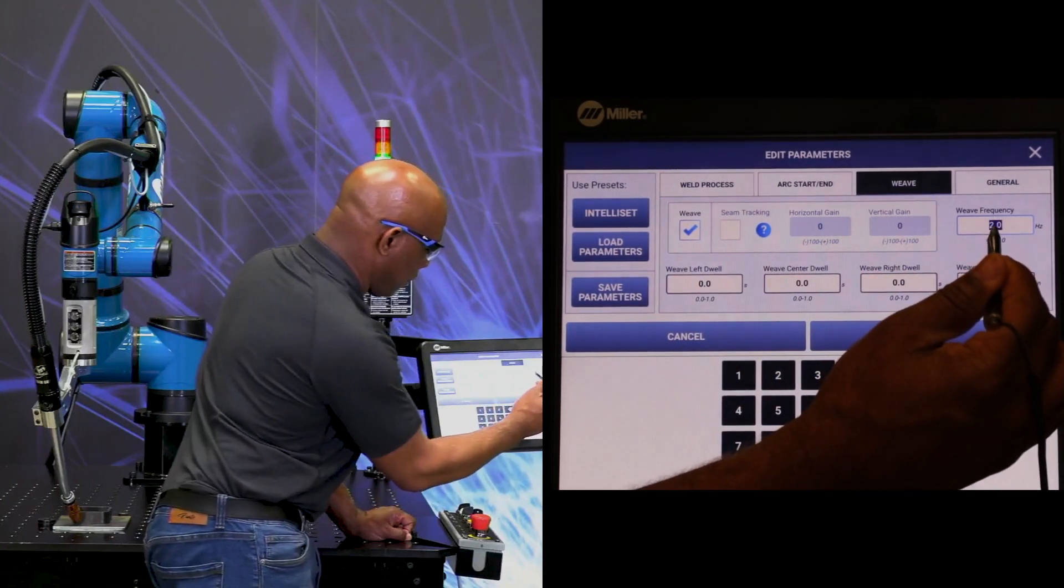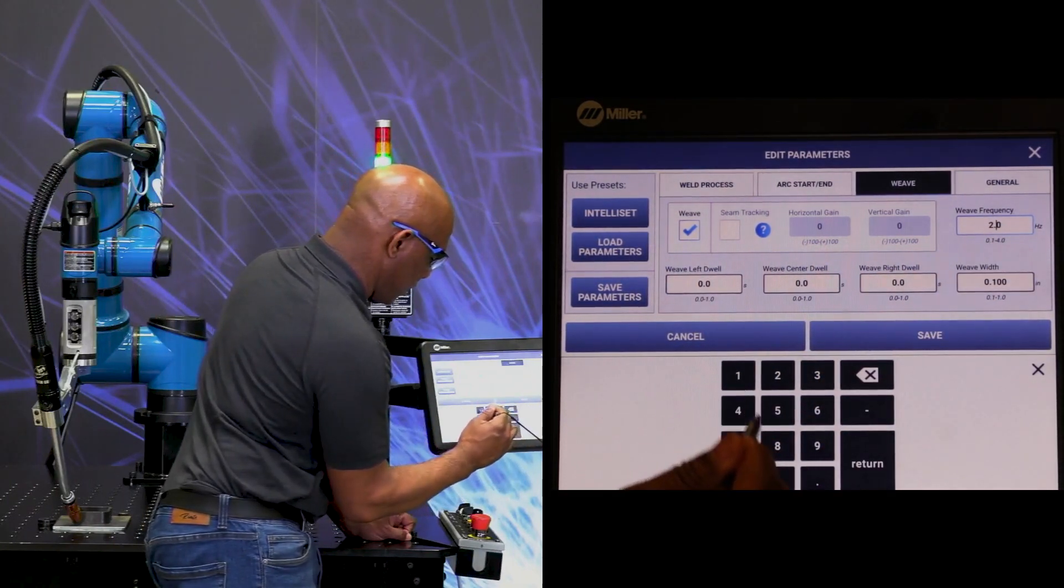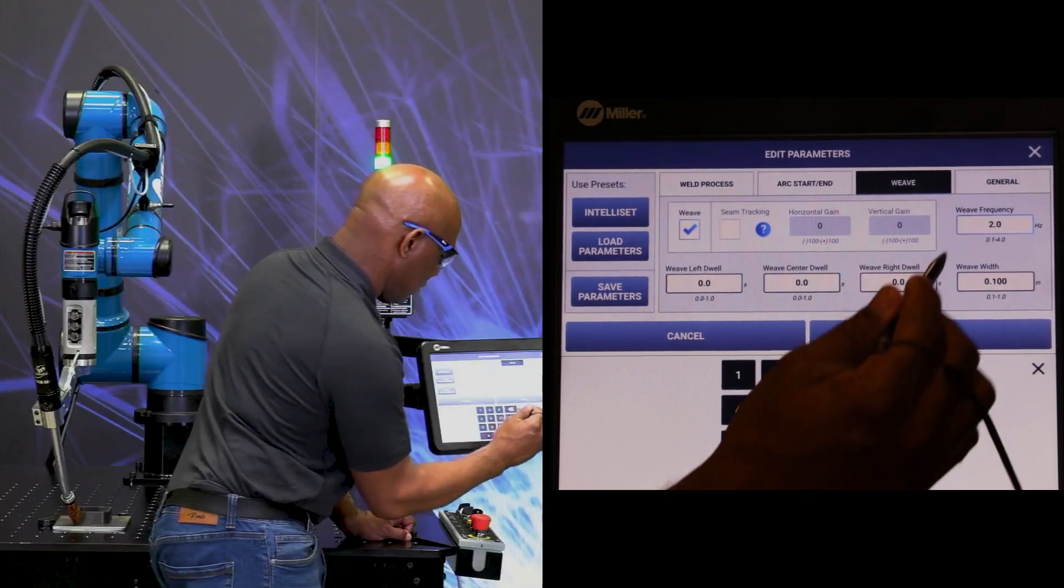And as you can see, the weave has a frequency. We can slow that down to, let's say, 1.7.